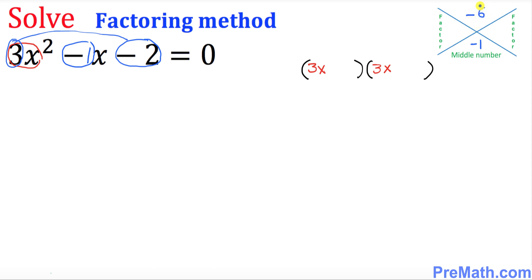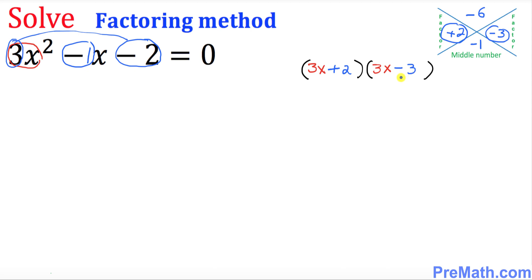Now look at negative 6 — what are the possible factors of negative 6 that, when you add them, give you negative 1? Those two numbers are going to be positive 2 and negative 3. So those are the factors. Go ahead and put down positive 2 and negative 3 right up here.